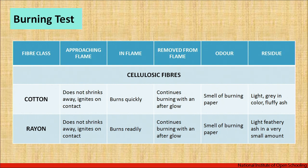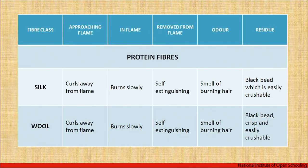For protein fibers, when silk and wool approach a flame, they curl away — they have a self-extinguishing feature. They burn slowly and always smell like burning hair. They form a black bead that is easily crushable. If a burned piece of fabric smells like burning hair, you can easily identify it as a protein fiber, then further distinguish between silk and wool by doing other tests.